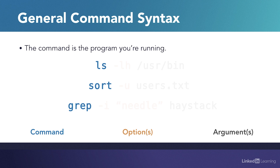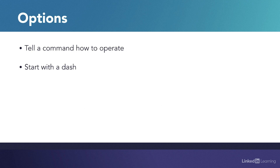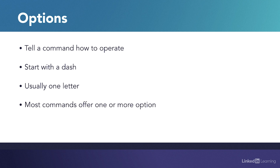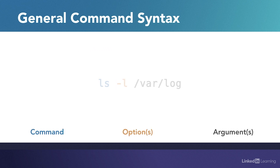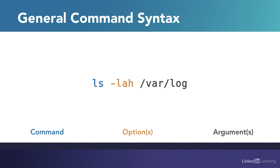Sometimes a command does something just by itself, but other times we'll want to change how a command works or tell it what data to use. The options tell the command how to operate, changing its behavior or telling it to perform different actions. Most options start with a dash and are specified by one letter. For example, I can add option -l to the ls command, which tells it to show a long listing of the files in a directory rather than a shorter one. I can add others, like -a and -h, which tell the command to show all files, not just the hidden ones, and to make file sizes human readable. Most of the time, instead of listing each option individually, we'll combine them right after one dash with no spaces in between. The order of the options usually doesn't matter, so they're interchangeable.